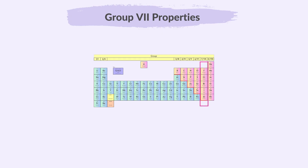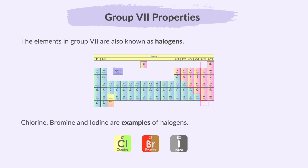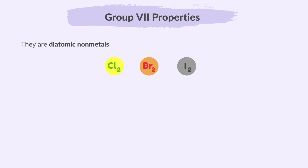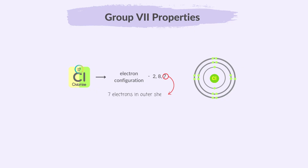Now we will move on to group 7 properties. The elements in group 7 are also known as halogens. Chlorine, bromine and iodine are examples of halogens. They are diatomic non-metals — for example Cl2, Br2 and I2. Diatomic means a molecule made up of two atoms; chlorine is diatomic because it has two chlorine atoms bonded together. All halogens have 7 electrons in their outer shell.